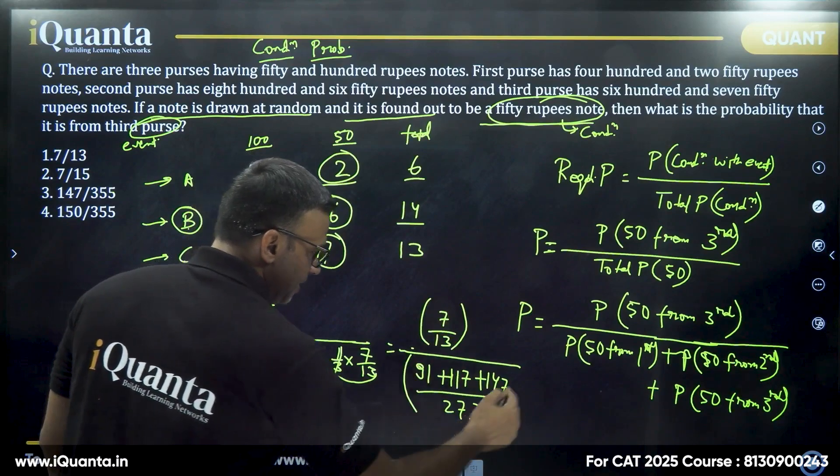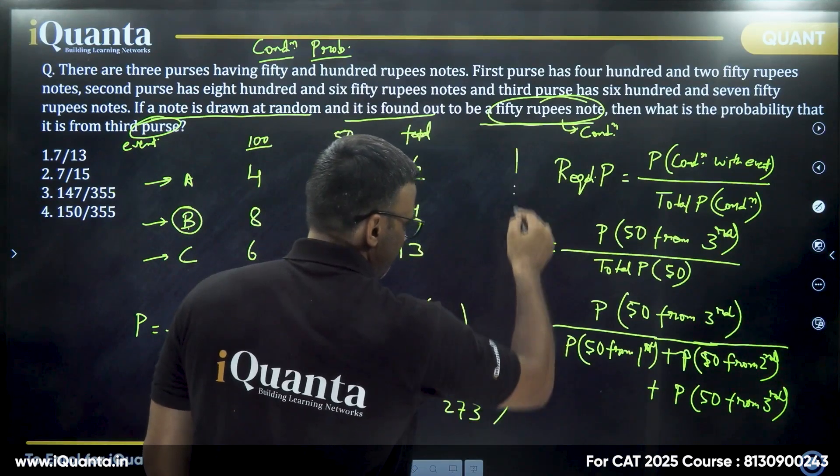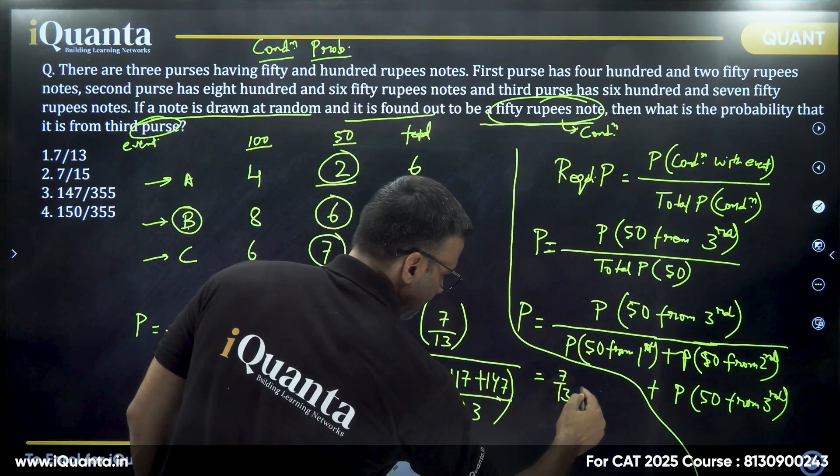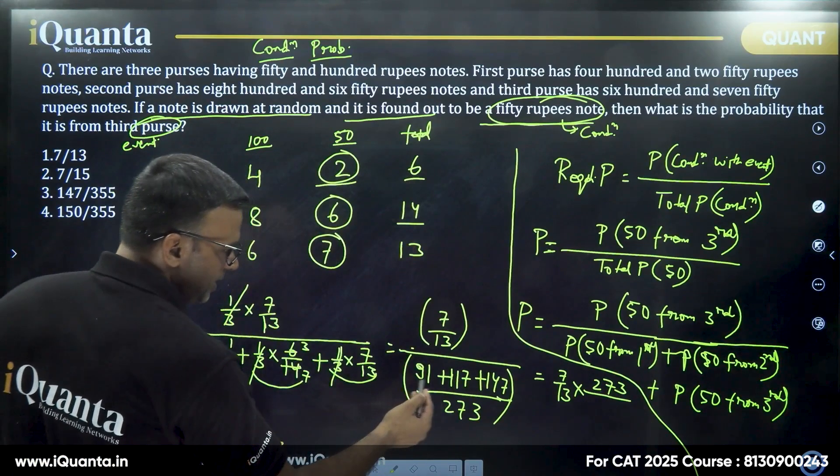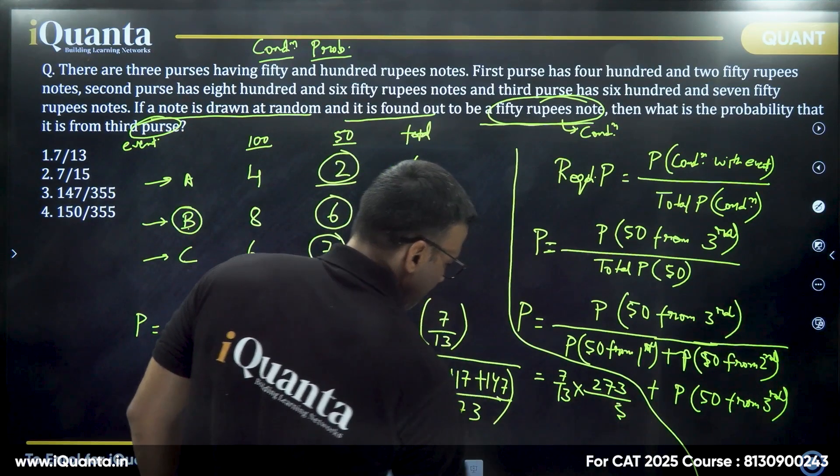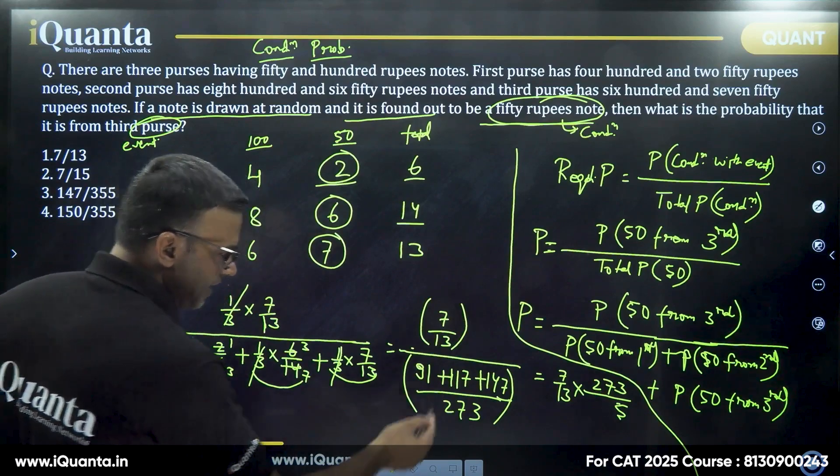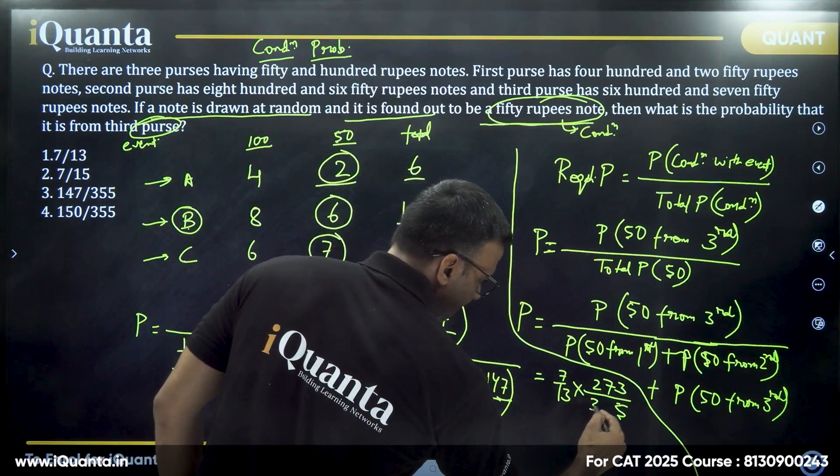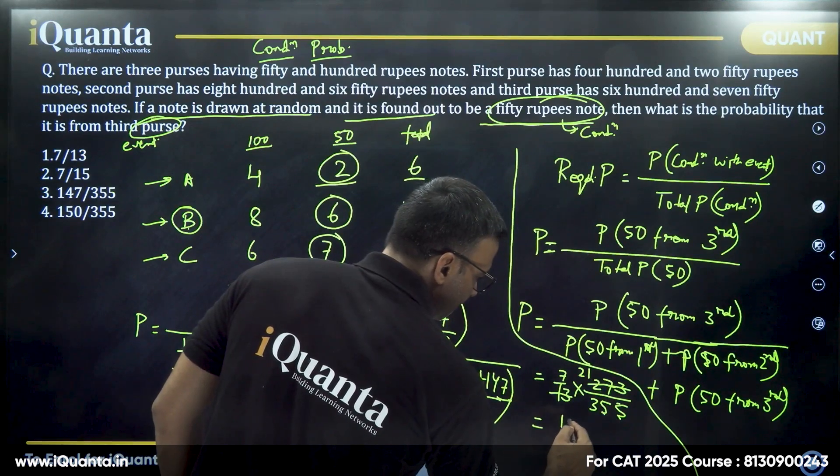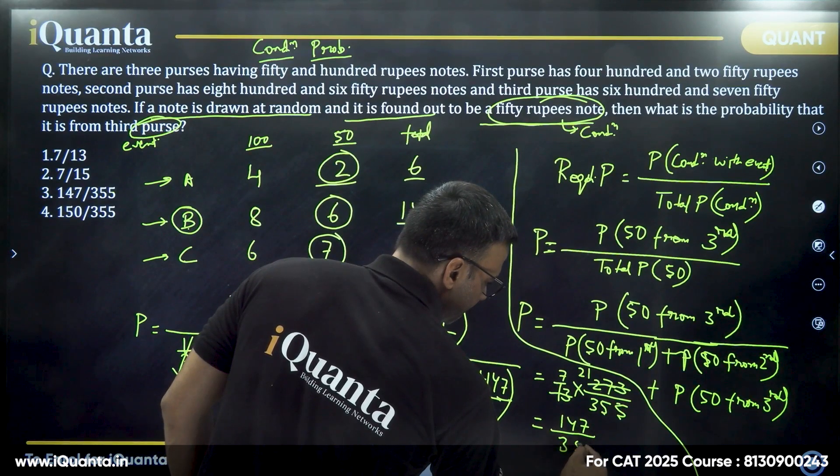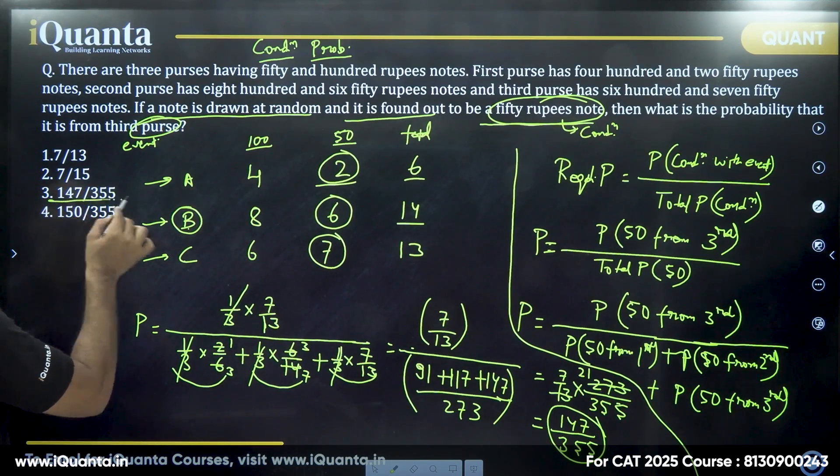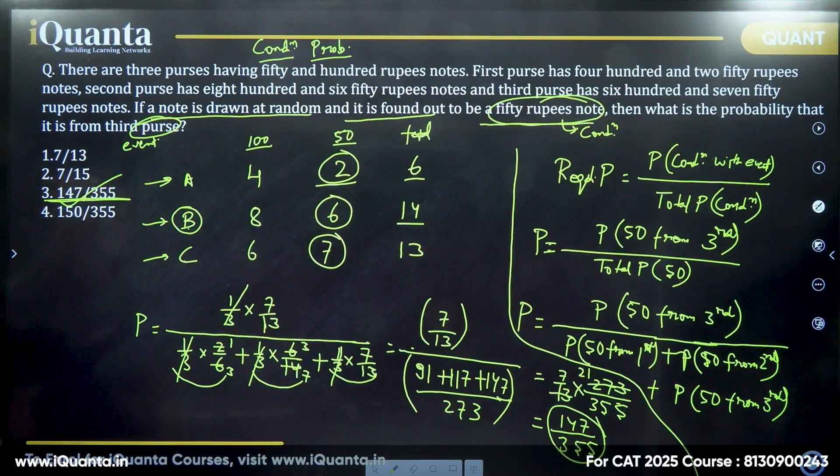So this seven by 13 divided by this item. So this comes out to be, just be careful, the space is a little less here. So this is equal to seven by 13 into 273 divided by 91 plus 117 plus 147. 14 and one, 15 and 11, 26 and nine, 35. So 355. Now 13 cancels 273, 21 times. So 21 into seven is 147 divided by 355. So the final answer of this question is 147 upon 355. Option three is the option C. Third option is the correct answer, right?